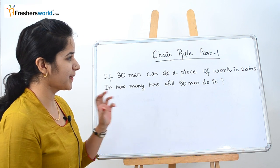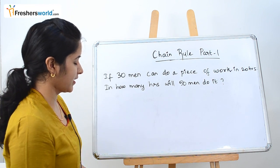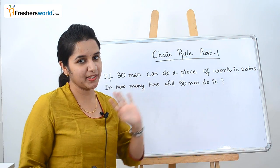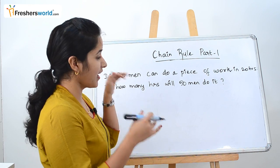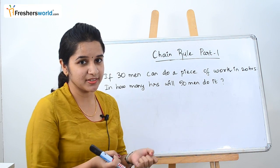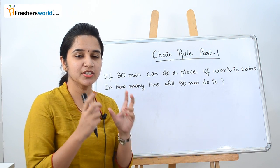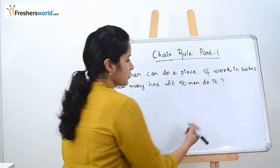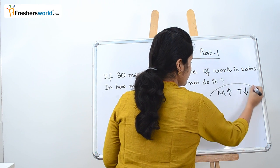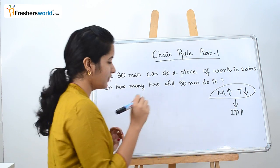The next question is: if 30 men can do a piece of work in 20 hours, in how many hours will 50 men do it? 30 men can do the work in 20 hours — how much time will it take for 50 men? If the number of men increases, the time taken to finish the work will decrease. This is indirect proportion.